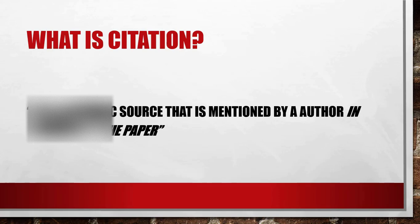Citation is a specific source that is mentioned by the author in the body of the paper. Whenever we write a research paper, we generally go through past studies done in the area relevant to our topics by taking help of magazines, news articles, journals, internet sites, past research papers and many more. Now if you want to quote a speech, a specific statement, or a finding from any past literature, then you need to give credit to the concerned authors, and that process is known as citation.